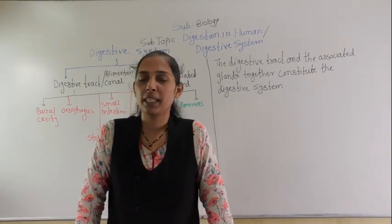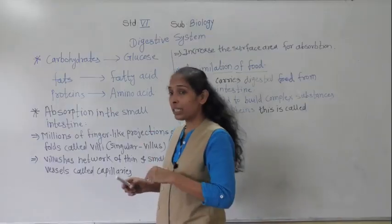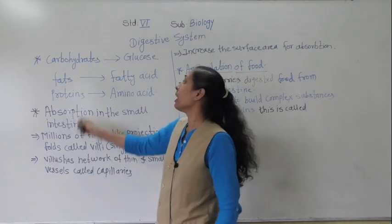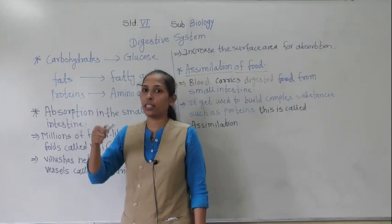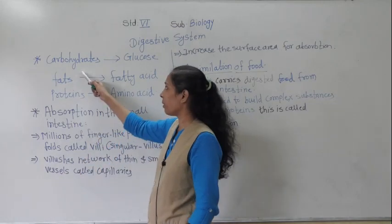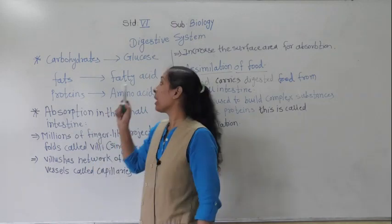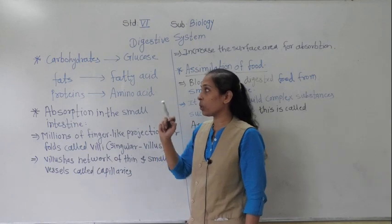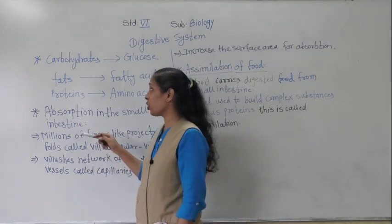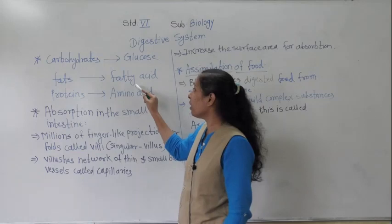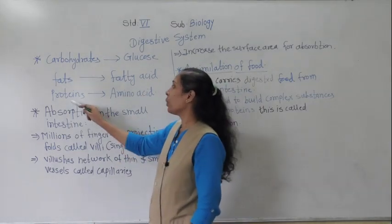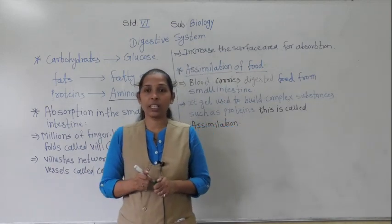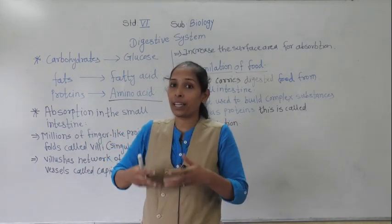Hello dear students, welcome back in our biology period. After digestion, or during digestion, the carbohydrate - that is partially digested food - gets converted into simple sugar, that is nothing but glucose. And while the digestion process, fats get converted into fatty acids and proteins get converted into amino acids. So in this way, the food gets digested.